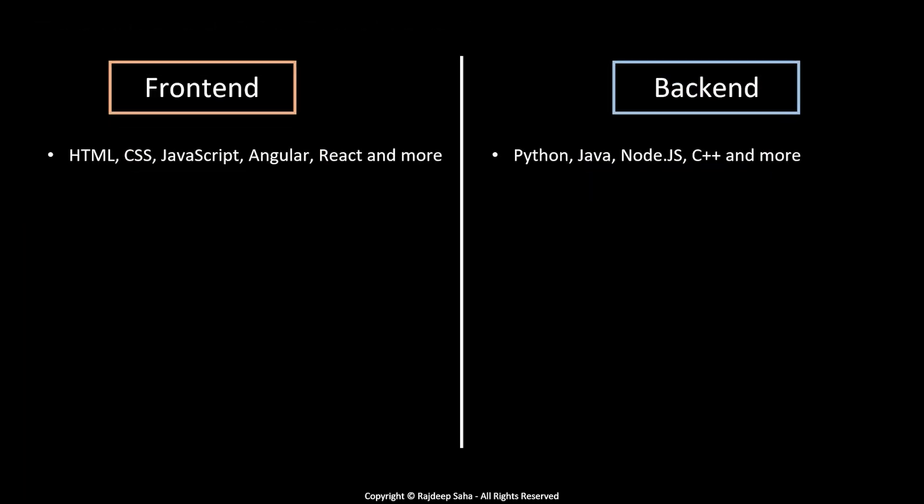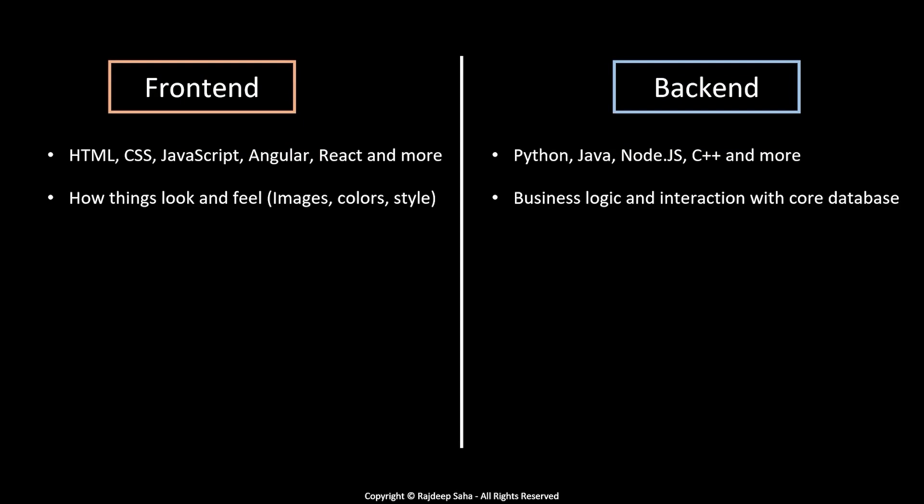Some other differences: front-end is how things look and feel — images, colors, style. The back-end has the business logic and interaction with the core database. These are generally true, but front-end can sometimes interact with a caching database directly without going to the back-end. When I say core database, I mean the primary database of your application where majority of the data is stored, and back-end interacts with that database.